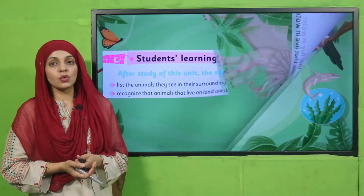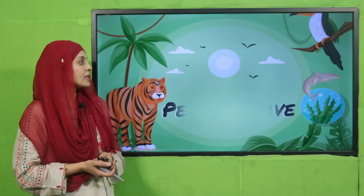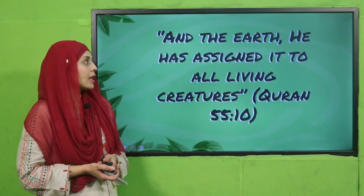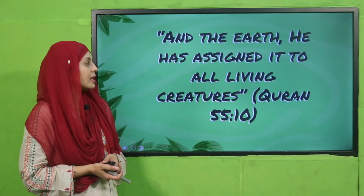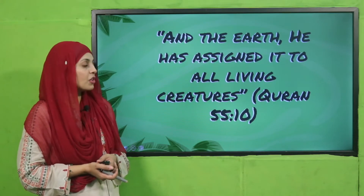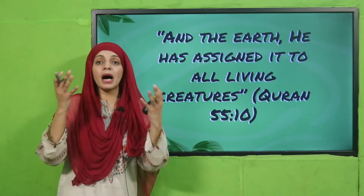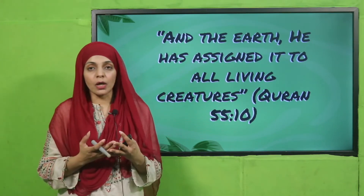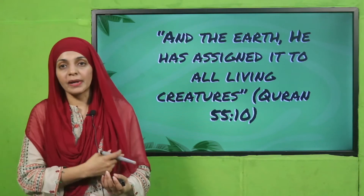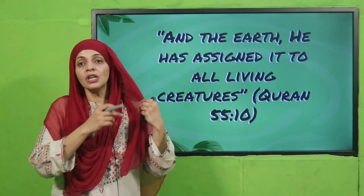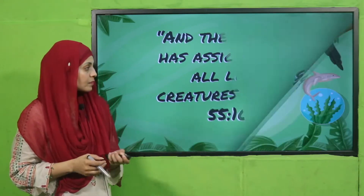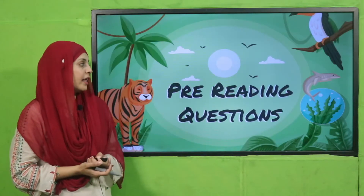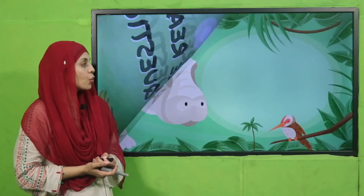Now is the time for the Islamic perspective. Allah says in the Quran that the earth He has assigned to all living creatures. Allah Ta'ala ne zameen ko tamam jaandaron ke rehne ki jagah banai hai, aur janwar bhi unme shamil hain.